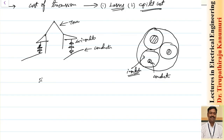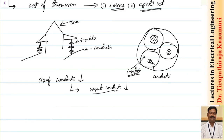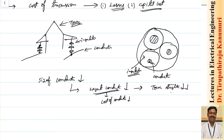If the size of the conductor is decreased, the weight and volume of the conductor decrease, so the cost of the conductor decreases. When the weight of the conductor decreases, the entire weight on the tower decreases, so the required tower strength decreases, reducing the cost of the tower. This saves cost in multiple ways.